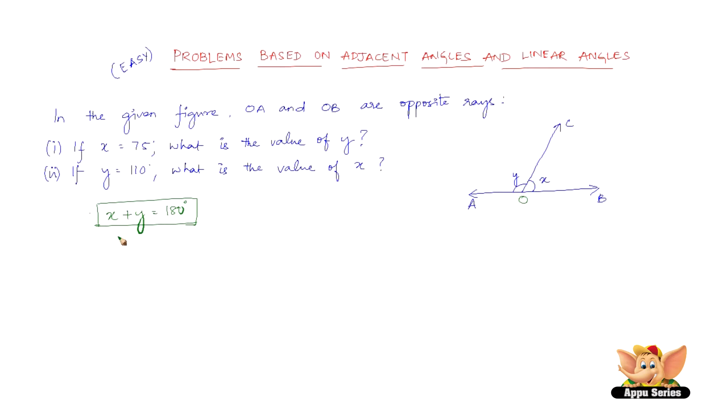The value of x is given as 75 degrees. Therefore, 75 plus y equals 180. So y equals 180 degrees minus 75 degrees, which is 105 degrees.